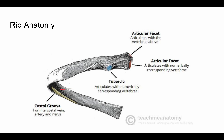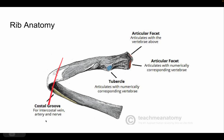The way we can tell whether a rib is left or right is fairly simple. You look at the side with lots of tubercles and irregular surface features — that should face posteriorly. The costal groove always faces inferiorly. So if you hold the rib facing you and the costal groove is pointing downward, it's a left rib. If it points upward in that orientation, you need to flip it, and it would be a right rib.